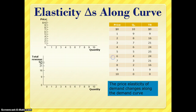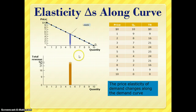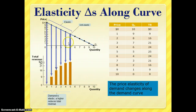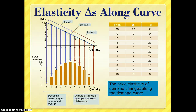Every demand curve has changing elasticities as you move along it. There will be a point at which it is unit elastic, and that's where you'll have the greatest total revenue. In the elastic section, as prices drop we see an increase in revenue. Once we hit the inelastic portion of the demand curve, we begin to see a reduction in total revenue.